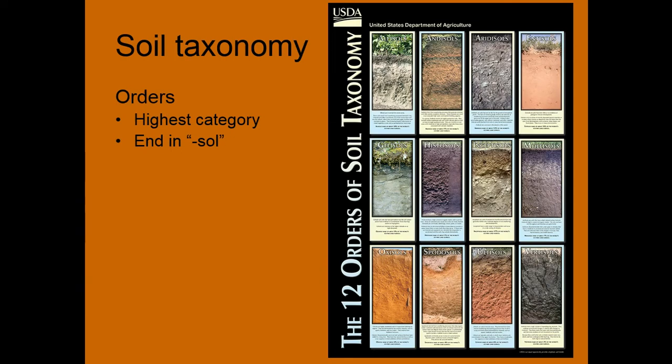As mentioned, we have 12 soil orders — it's our highest category. They all end in 'sol'. So they are: Alfisol, Andisol, Aridisol, Entisol, Gelisol, Histosol, Inceptisol, Mollisol, Oxisol, Spodosol, Ultisol, and Vertisol. We'll go through each one of these.